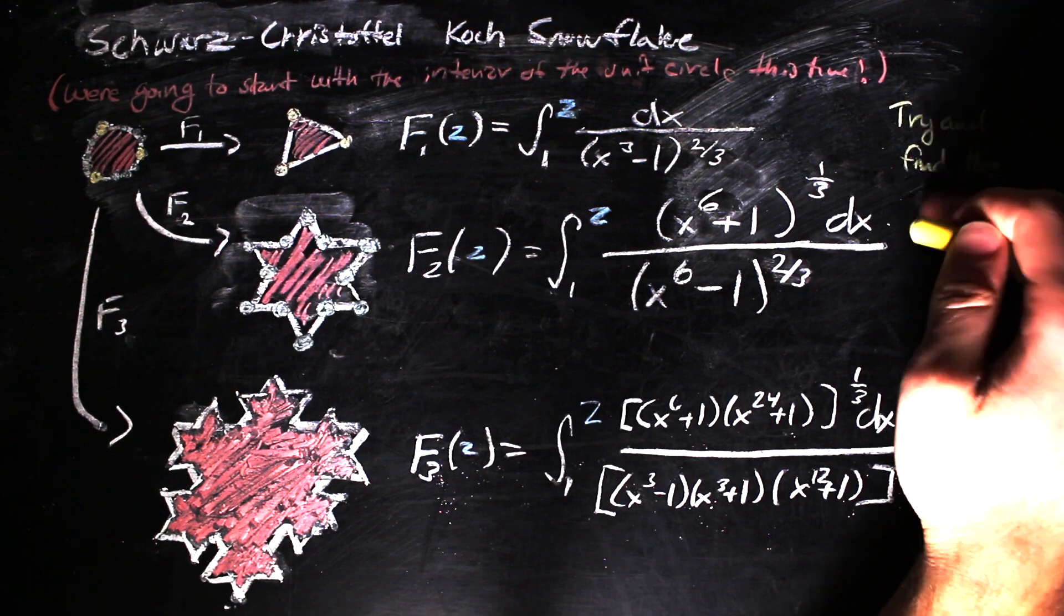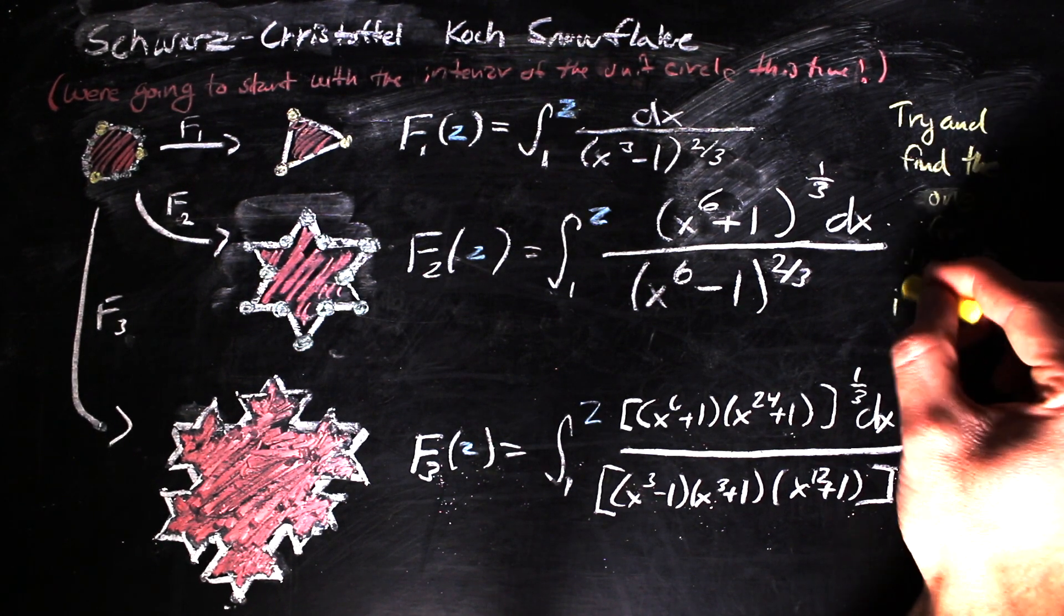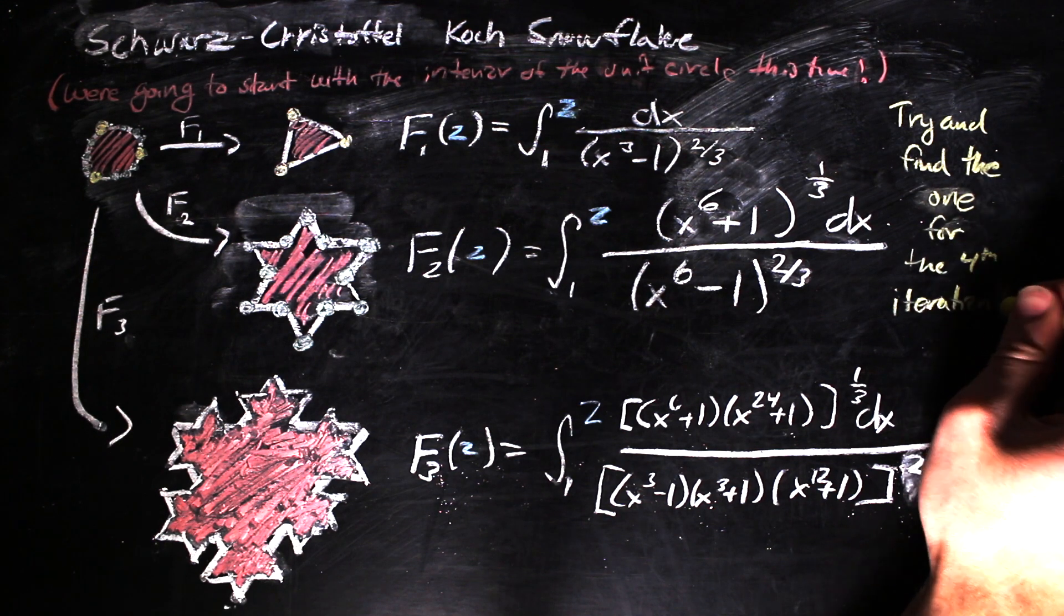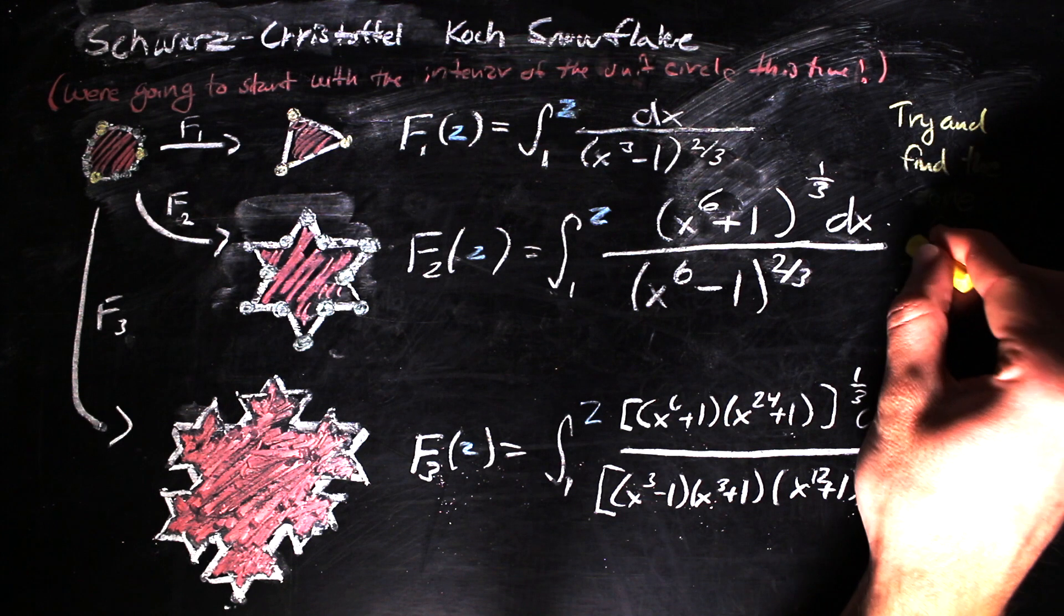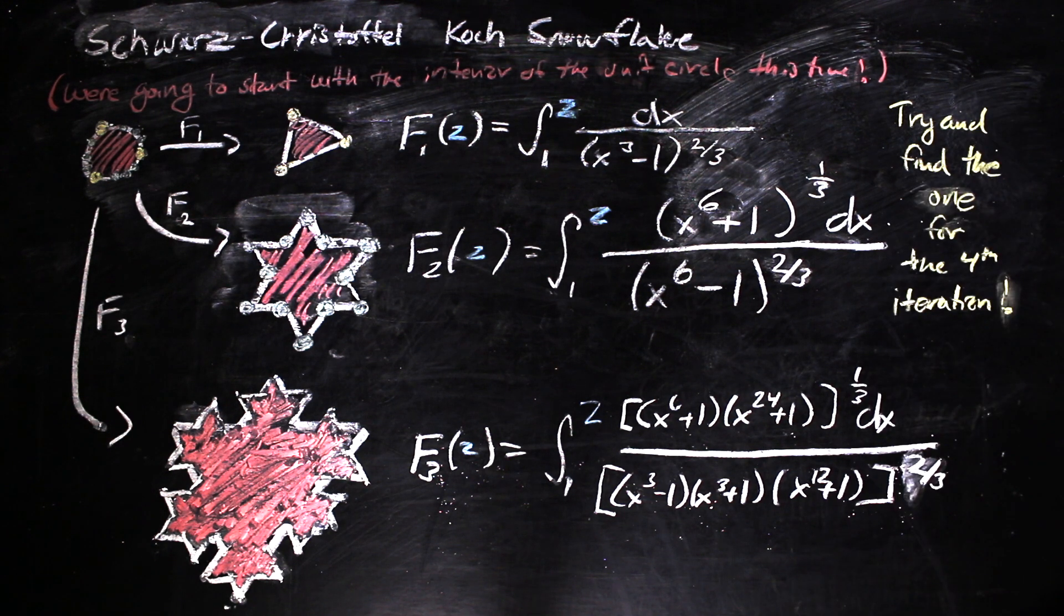I've condensed the mappings a little bit so they're more reasonable to write down here, and there is a pattern to these mappings. So if you want to go ahead and try to figure out what the mapping to the fourth iteration would look like, it's a mess, but it's doable.